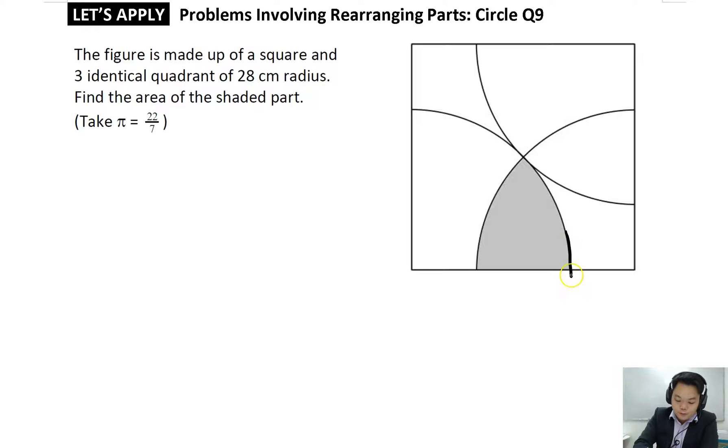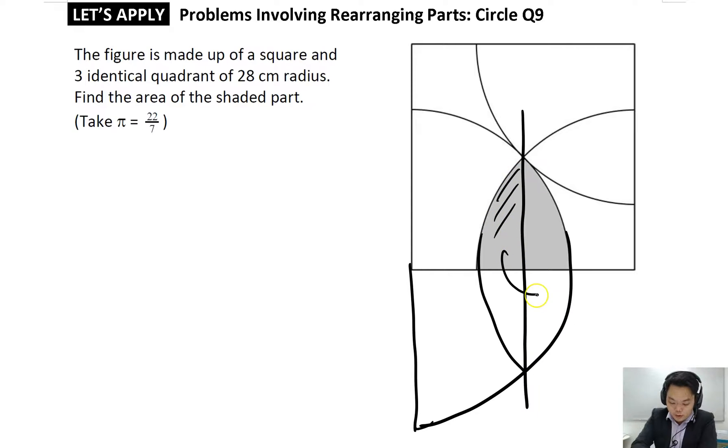To deal with this problem, let me first extend out this quarter circle to a semi-circle. Let me extend out this quadrant as well. Then let me draw a vertical line through this. We can see that this portion can be moved over here.